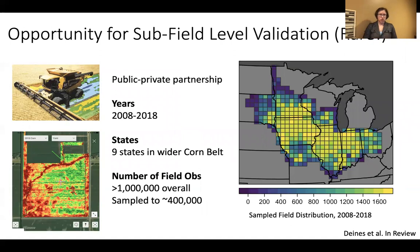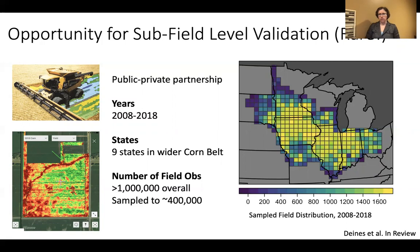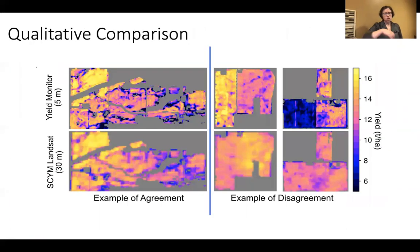I've been working on an opportunity for subfield-level validation using a really extensive ground truth data set. This data set comes from combine harvesters that have a yield monitor on them, giving a real-time map of field yields as they harvest. We have these maps for over 1 million field observations, sampled down to 400,000 to equally represent space and time in our data set.